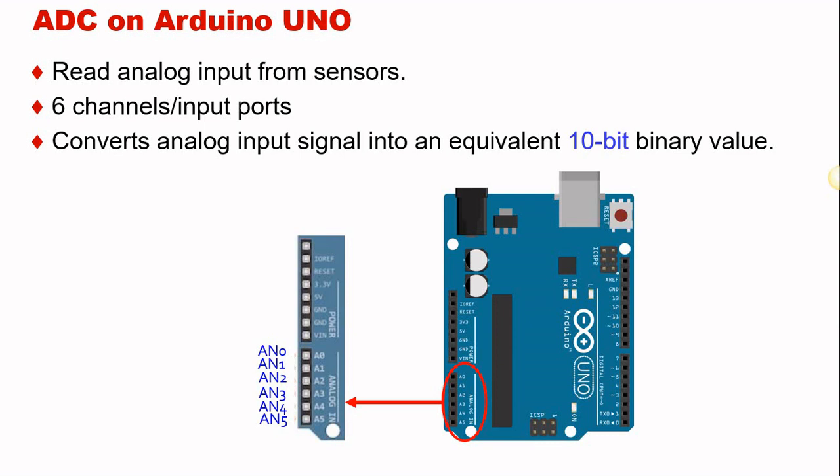For the Arduino, it will convert the analog inputs from your sensors into the equivalent of 10-bit binary value. The analog input can be chosen from 3.3 or 5 volts as the voltage reference for your ADC.